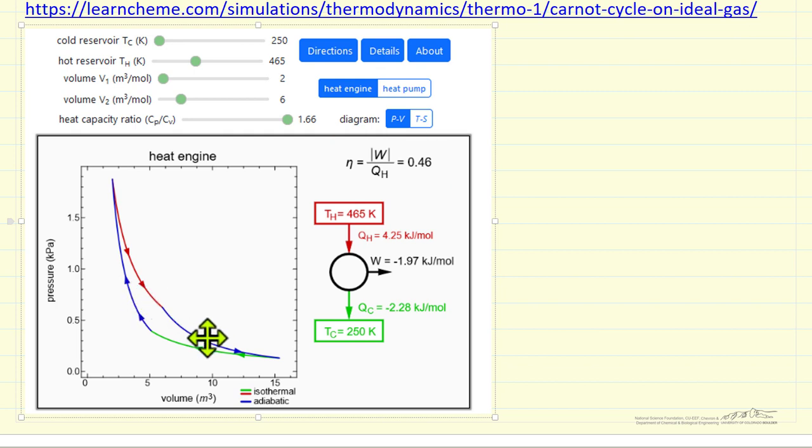The two blue lines correspond to the adiabatic steps, and then this red line is the heat added corresponding to here, and the green line is the heat removed. These green and red are both isothermal steps. So let's pause and then look at the actual simulation.